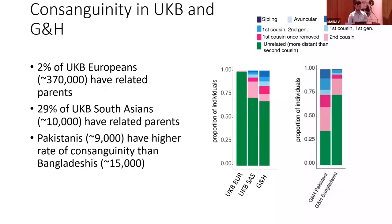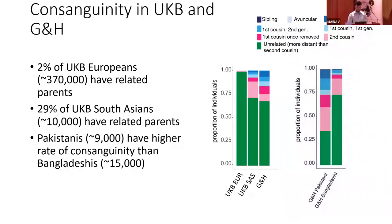In UK Biobank, we analyzed European and South Asian ancestry individuals. Only 2% of UK Biobank Europeans have parents inferred to be related, with the majority being second cousin relationships. But among UK Biobank South Asians, 29% are inferred to have related parents, and the rate is even higher in the Genes and Health cohort. Genes and Health Pakistanis have the highest rate of consanguinity, with over 25% inferred to have parents that are first cousins or closer.